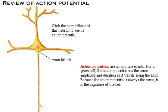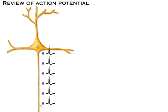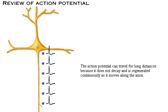Click the axon hillock of this neuron to see its action potential. The action potential can travel for long distances because it does not decay and is regenerated continuously as it moves along the axon.